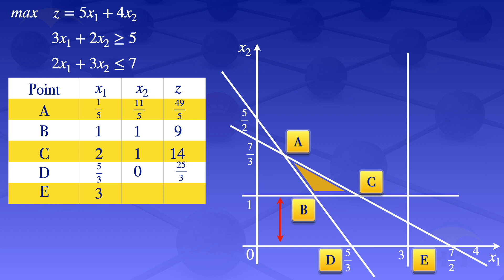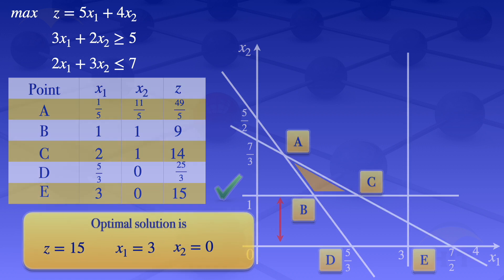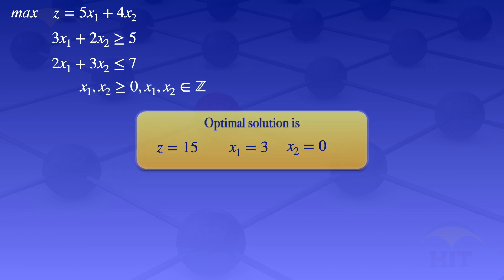This is a maximization problem, so we look at the largest value of z. The largest value is 15, so the optimal solution is z equals 15, occurring when x1 equals 3 and x2 equals 0. We now have integer values for x1 and x2, and therefore we have found the solution of the integer programming problem. The solution is z equals 15, x1 equals 3, and x2 equals 0.